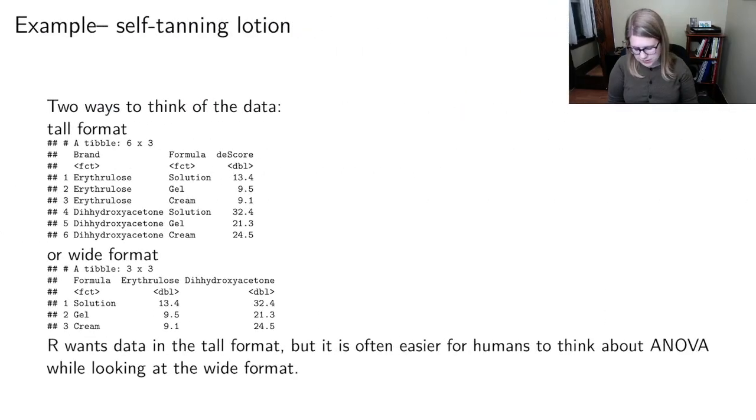So this is an example which has to do with self-tanning lotion, and there's two brands or chemicals that are in self-tanning lotion. I'm not going to try and pronounce these, but there's the E1 and there's the D1. And then there's three different ways that you could apply self-tanner. You could use it as a solution, a gel, or a cream.